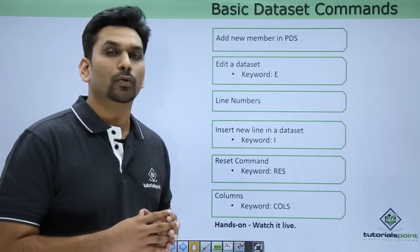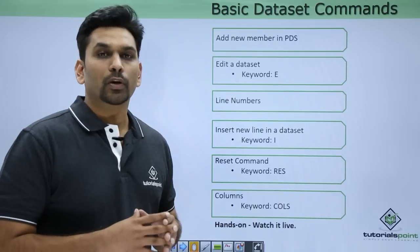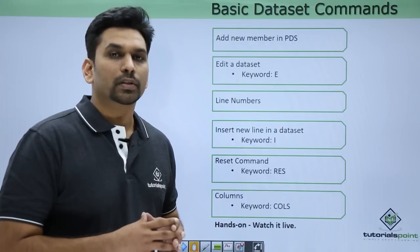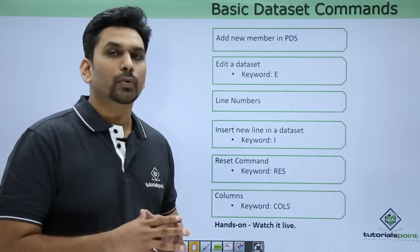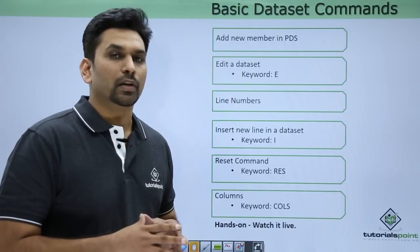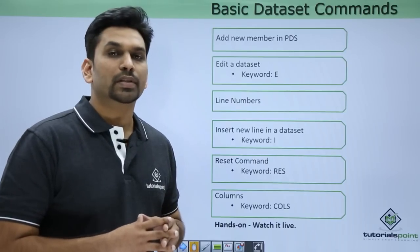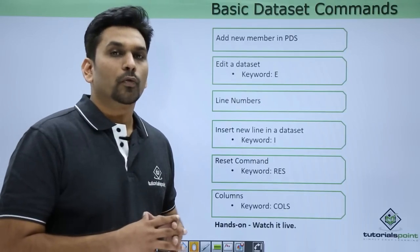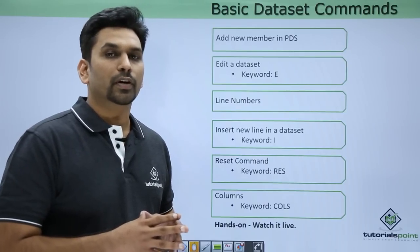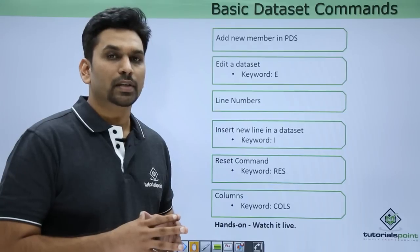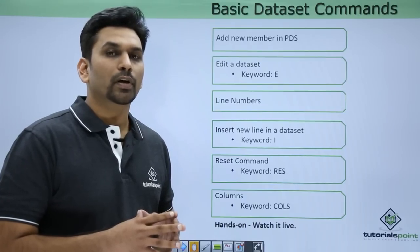First of all, adding a new member is similar to adding a file inside a folder in Windows. Suppose you want to add a new file in a folder — you right click and add a new text file. Similarly, in mainframes you can add new members in PDS. For that you need to type E in front of the PDS, then in brackets mention the name of the new member.